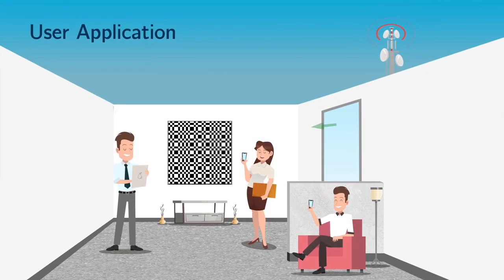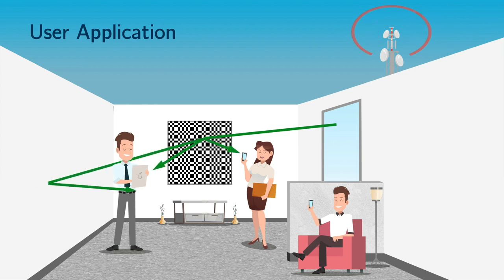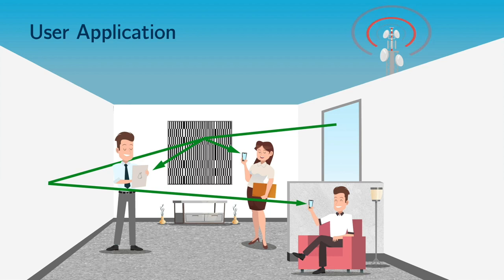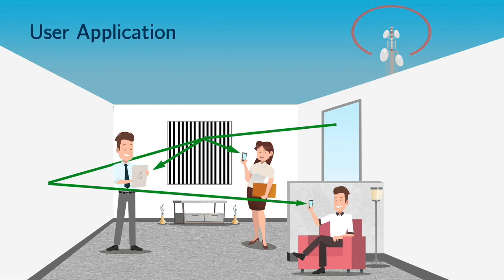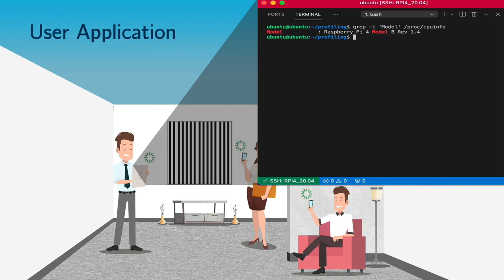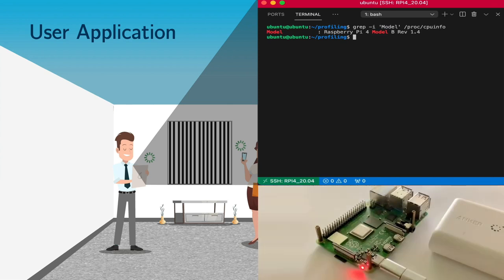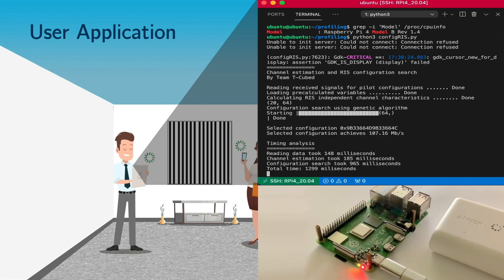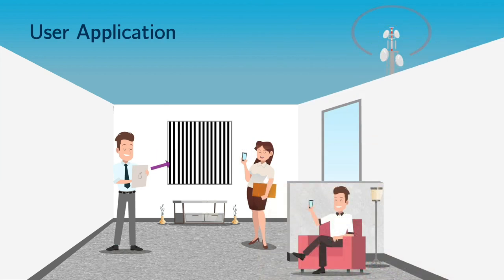For each user, the same set of pilot configurations are set in the IRS. Then, the received signals are recorded. Afterwards, in the local device of each user, the algorithm runs. We have simulated in a Raspberry Pi 4 device. The channel is estimated and then an optimum configuration is found in 1.3 seconds. The user then informs the IRS with his desired configuration.